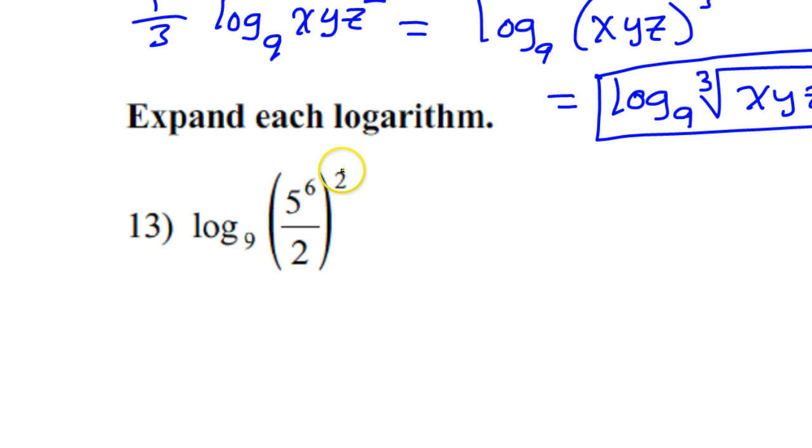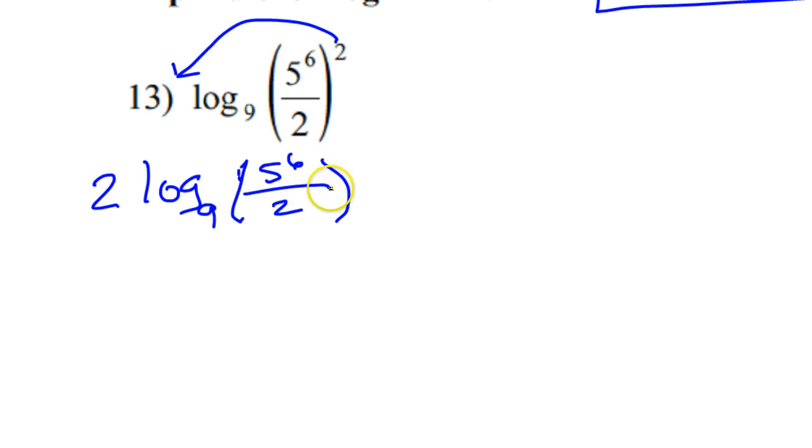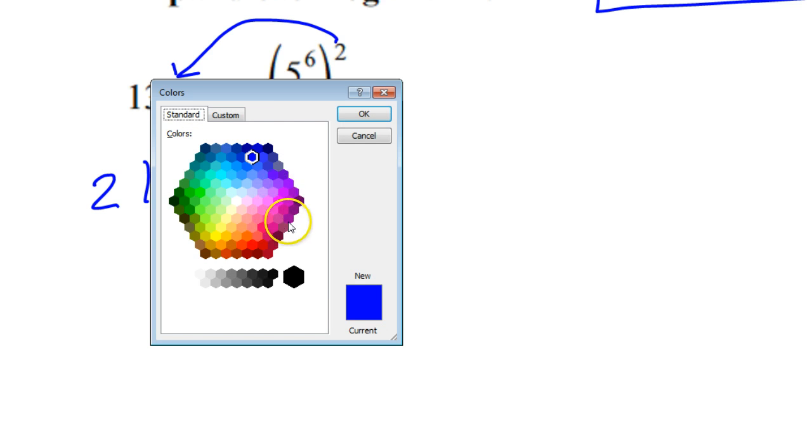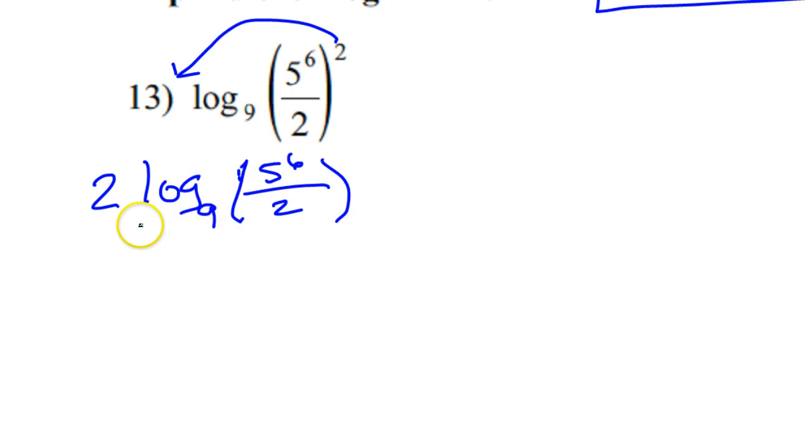So see how this 2 is a power? I'm going to take that and that's going to wind up out front. So that's going to be 2 log base 9 of 5 to the 6th power over 2. Okay, next is going to be time to do the quotient rule. Okay, so if I look at this log right here, just this part, just focus on that right there.